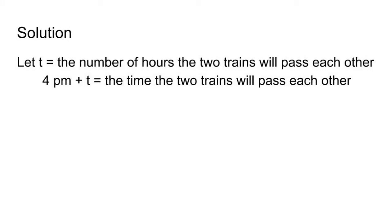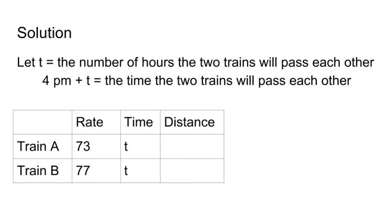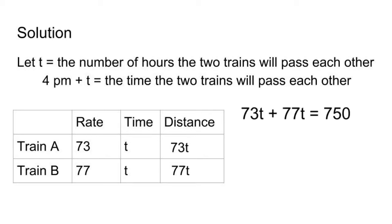Let t be the number of hours until the two trains pass each other, and 4 p.m. plus t equals the time the two trains will pass each other. Let's organize using a chart. The rate of train A is 73 and train B is 77. The distance traveled by train A is 73t and for train B, 77t. So our equation is 73t plus 77t equals 750.